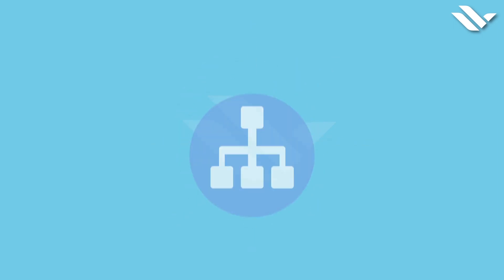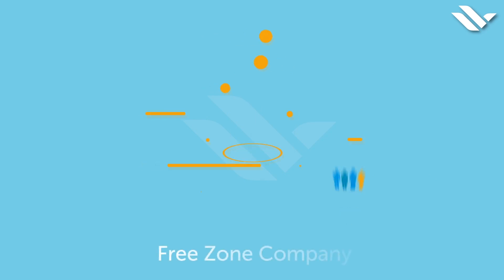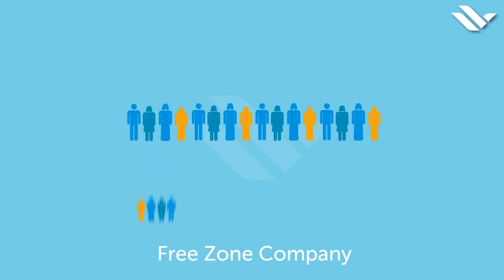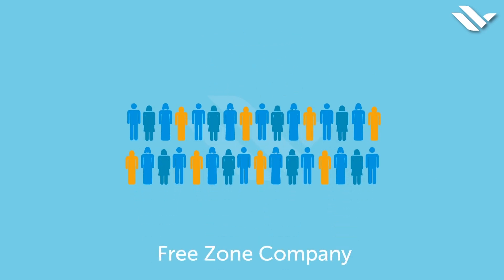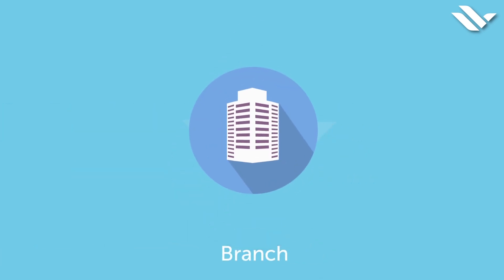As the first step towards starting your company, you need to choose the type of entity. FZE, the Free Zone Establishment, owned by a single shareholder. FZC, Free Zone Company, consisting of 2 to 50 shareholders. Branch of a foreign company or a local company.